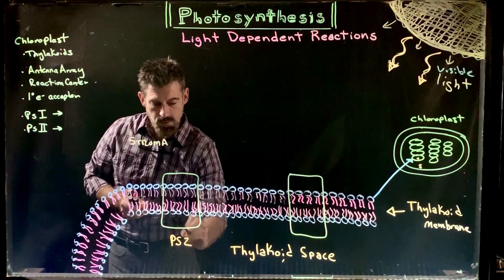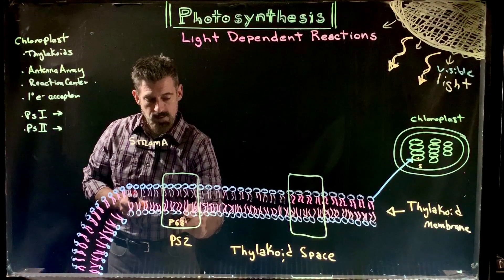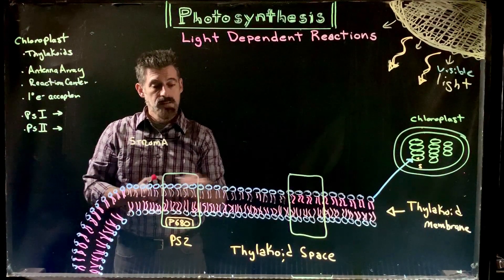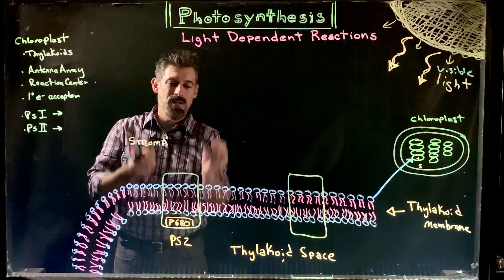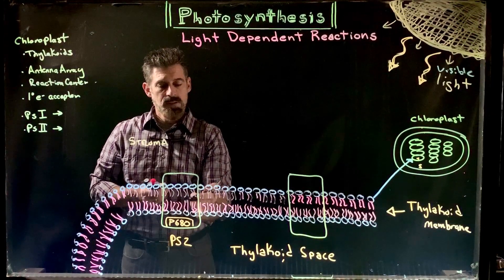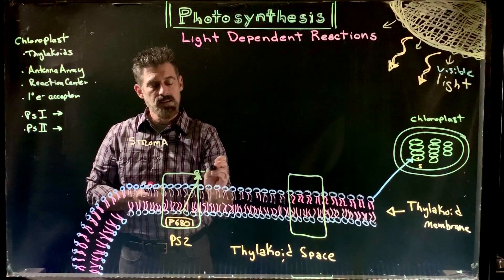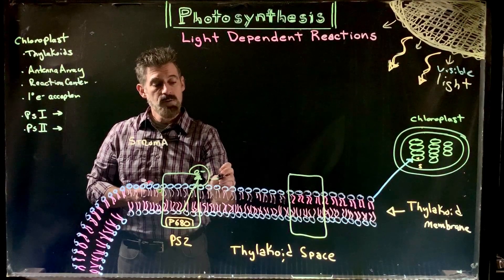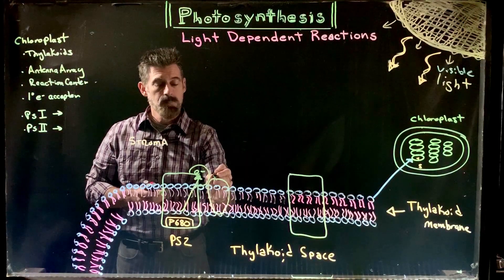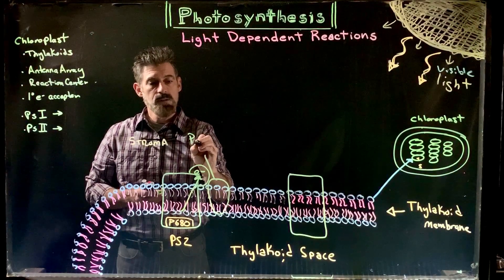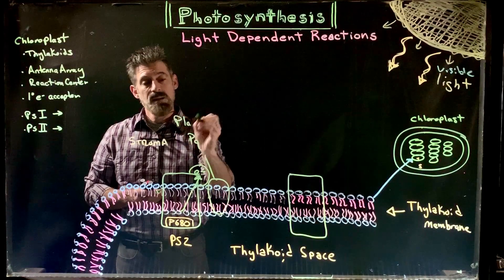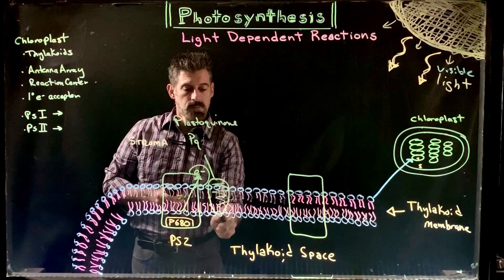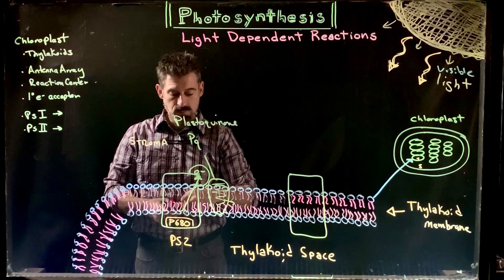This is Photosystem 2, which we call P680 — that's the reaction center for Photosystem 2. Electrons from that reaction center chlorophyll will be excited. They go to the primary electron acceptor, which passes them on to a carrier embedded in the thylakoid membrane sometimes referred to as PQ, because its name is plastoquinone. Plastoquinone then passes the electrons on to another molecule.